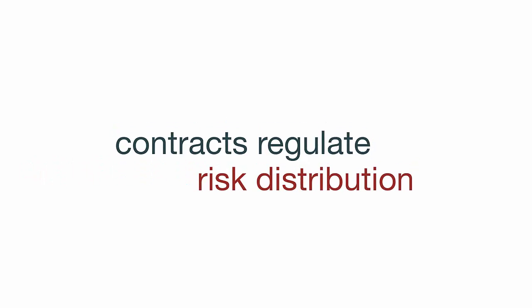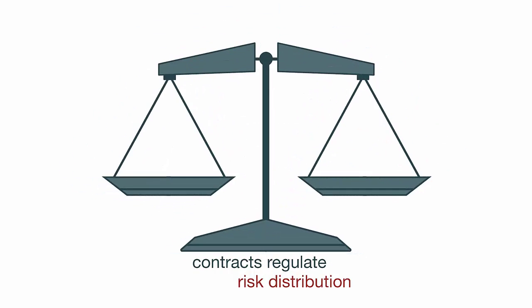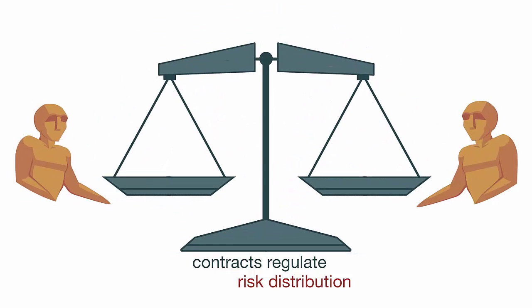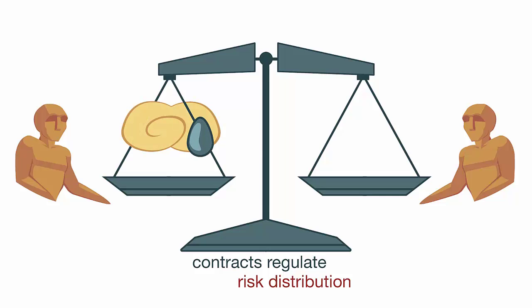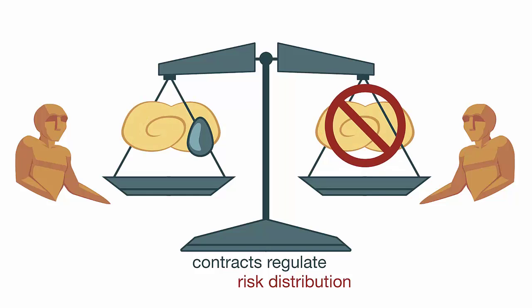A contract regulates risk distribution — contracts can shift the burdens of risk between the parties. The law holds that parties can contract with regard to any risk, even risks that they have no control over, however absurd or improbable. Two parties could essentially make a contract as to whether it will rain or not, and that would be valid. Furthermore, the parties can contract regarding a termination of the contract without either party having to perform, so a contract can provide for a situation in which neither party is obligated to perform.